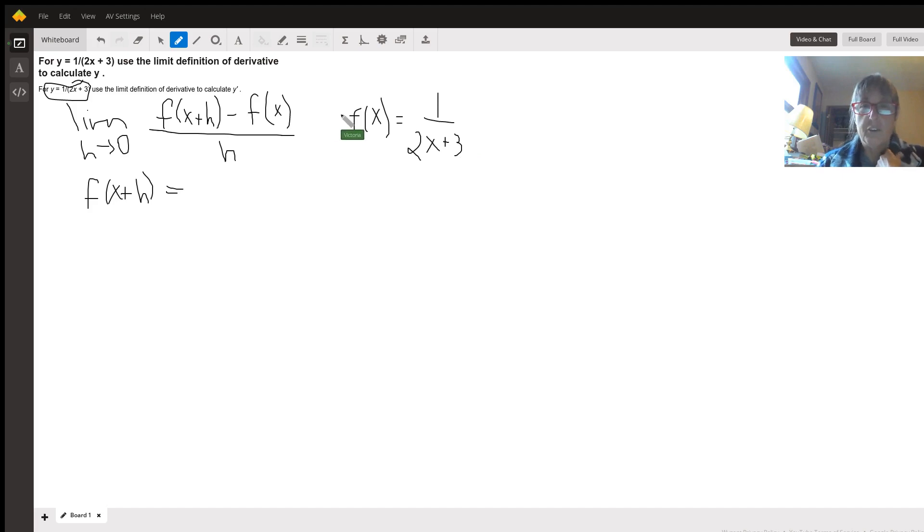So if I replace every x with x plus h, which is the way these work, then what I get is 1 over 2 in place of x right here, I'm going to put x plus 3 – not x plus 3, x plus h. Sorry, I can't read my writing. If I put x plus h, and then we have this plus 3.